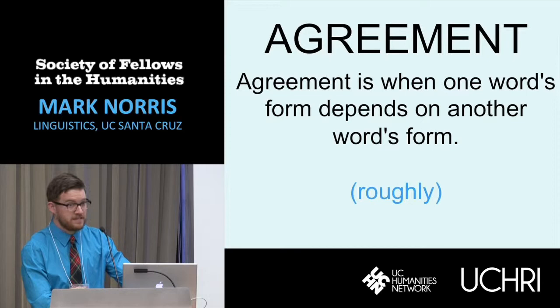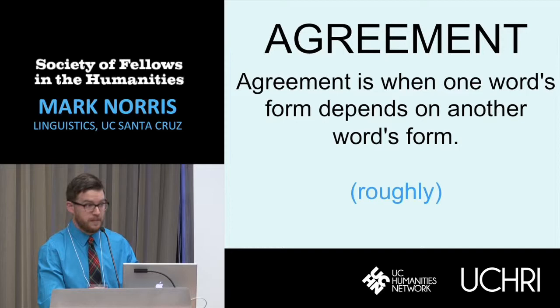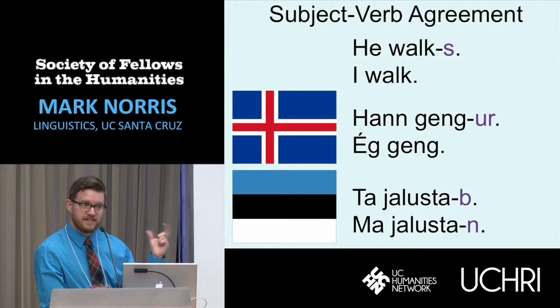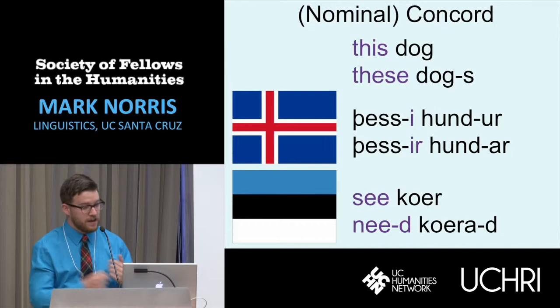I'm going to talk about the parallels between sentences and noun phrases in the domain of what's called agreement, which we could roughly say is when one word's form depends on another word's form. To give you some examples, one common form you're probably familiar with is subject-verb agreement — when a verb indicates the person and number of its subject. For example, in English, 'he walks' versus 'I walk': you have this S in the 'he' form but not in the 'I' form.